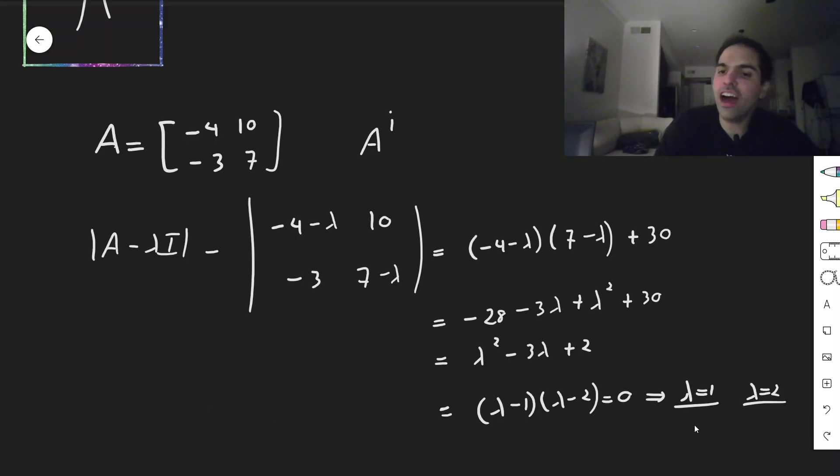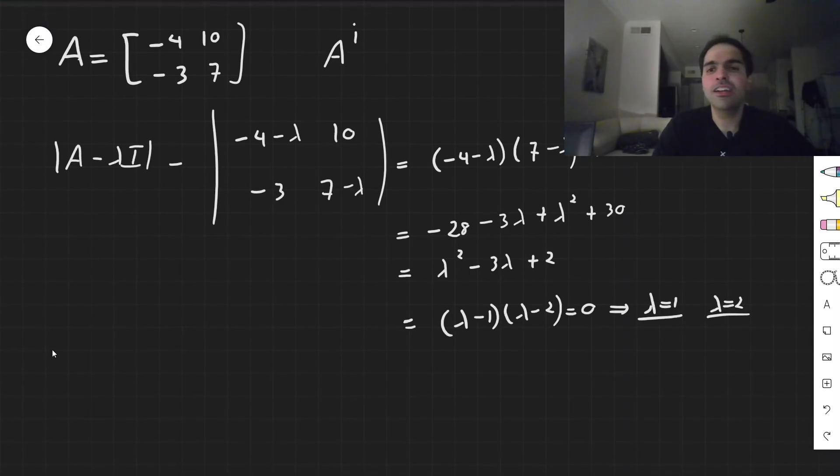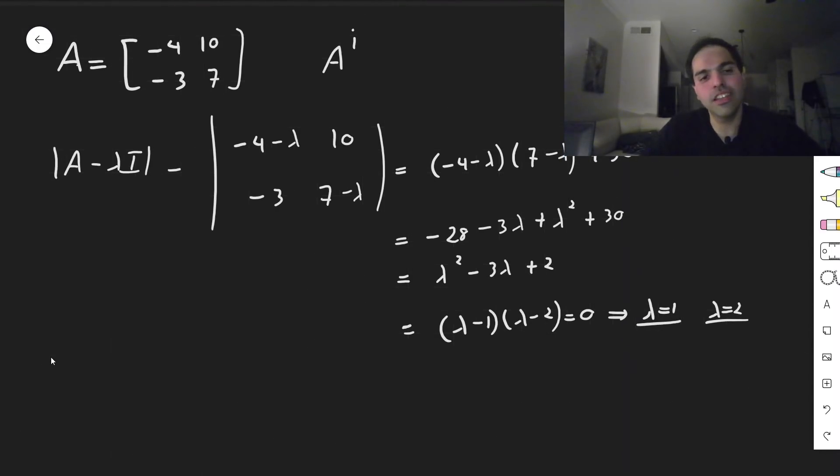And then for every eigenvalue, you have to find the corresponding eigenvector, and just for simplicity, let me just do it for the first eigenvalue, and then I'll tell you what the result is for the second one.